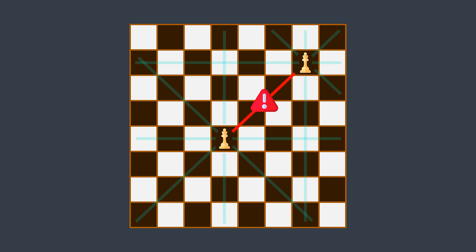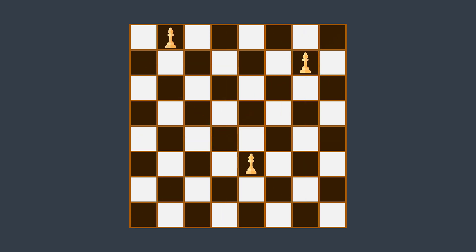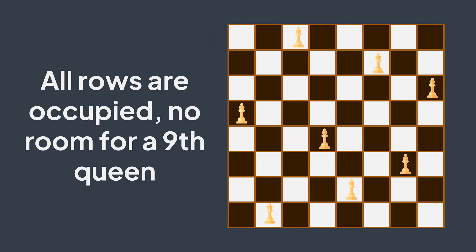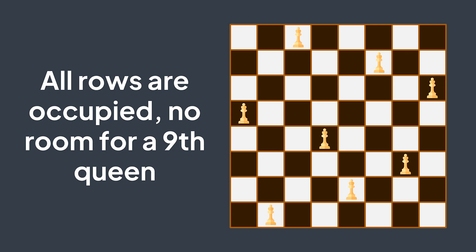So you ask yourself: can I put multiple queens on the same 8x8 chessboard without having two queens threatening each other? For a small number it's easily doable — for example, we can put three queens in many different ways without any threat. For a number of queens greater than eight it's totally impossible because of the pigeonhole principle: two queens threaten each other when on the same row, so each queen must have its own row, and with only eight rows we cannot place more than eight queens.